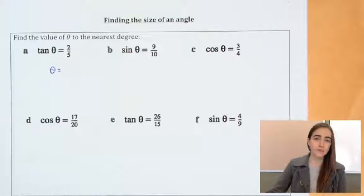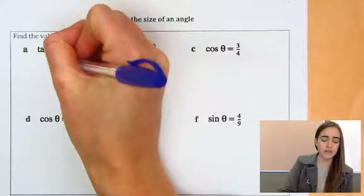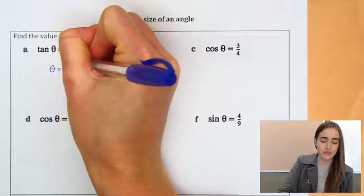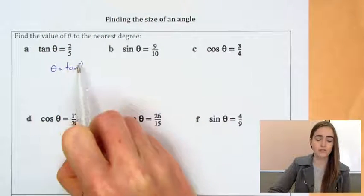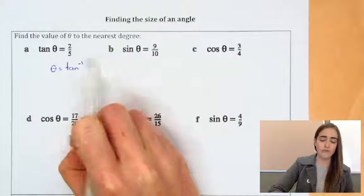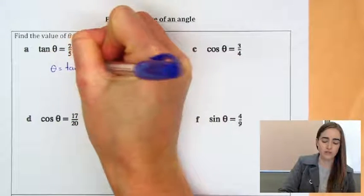Now the mathematical word for opposite is inverse. So what we're going to do is write tan inverse, so it's like tan with a little minus 1 above it, of that fraction. So then in brackets, you're going to write 2 over 5.